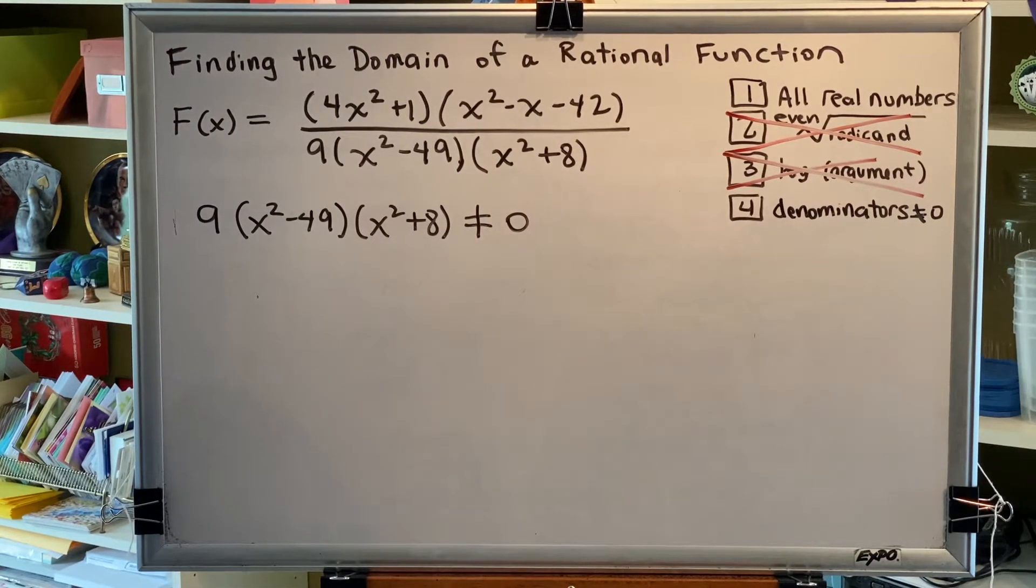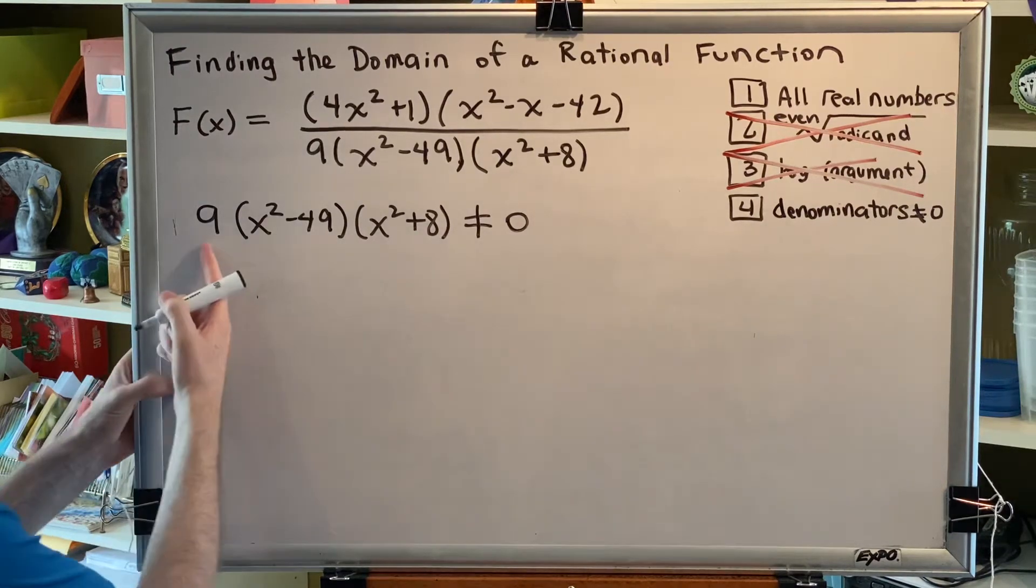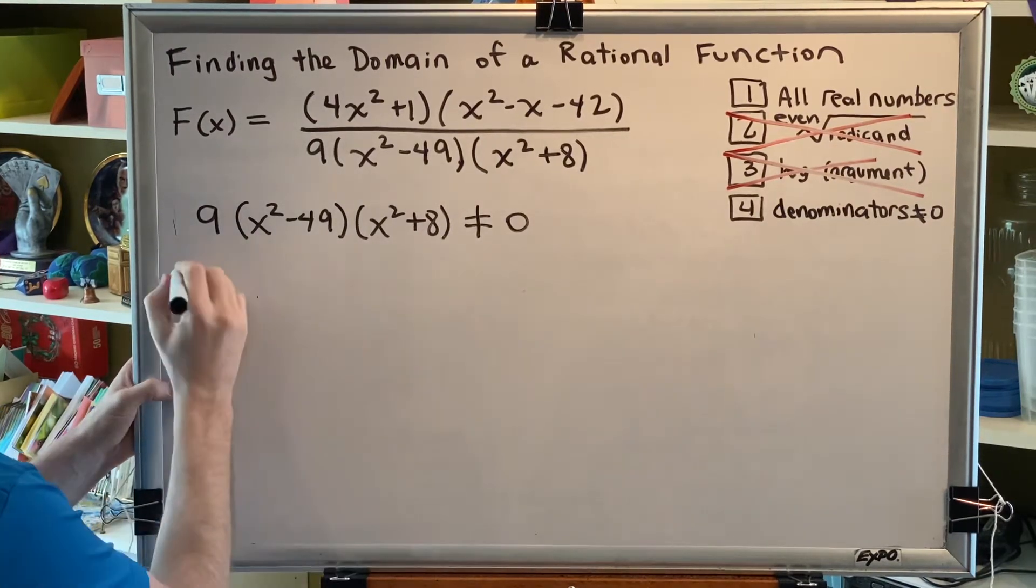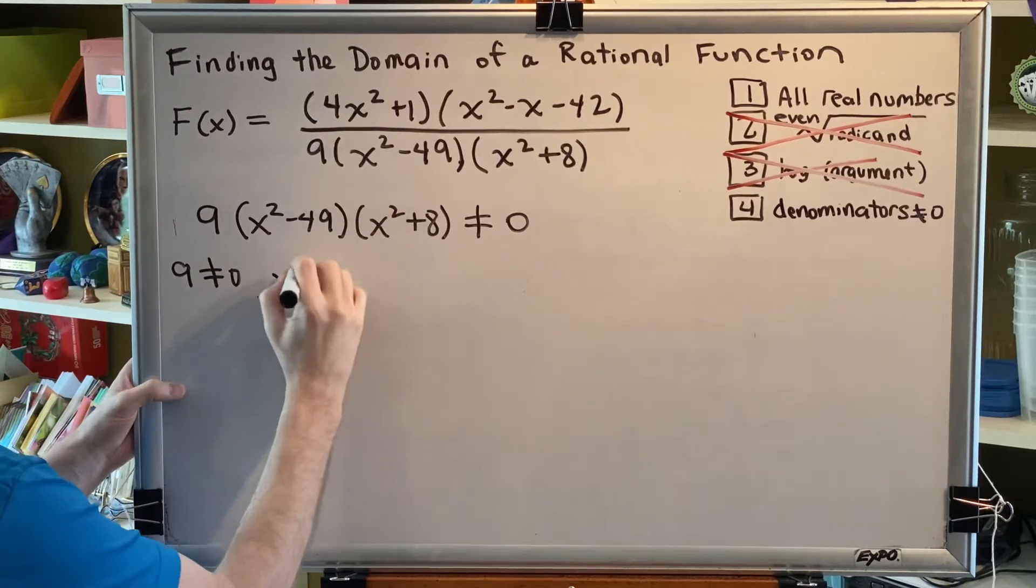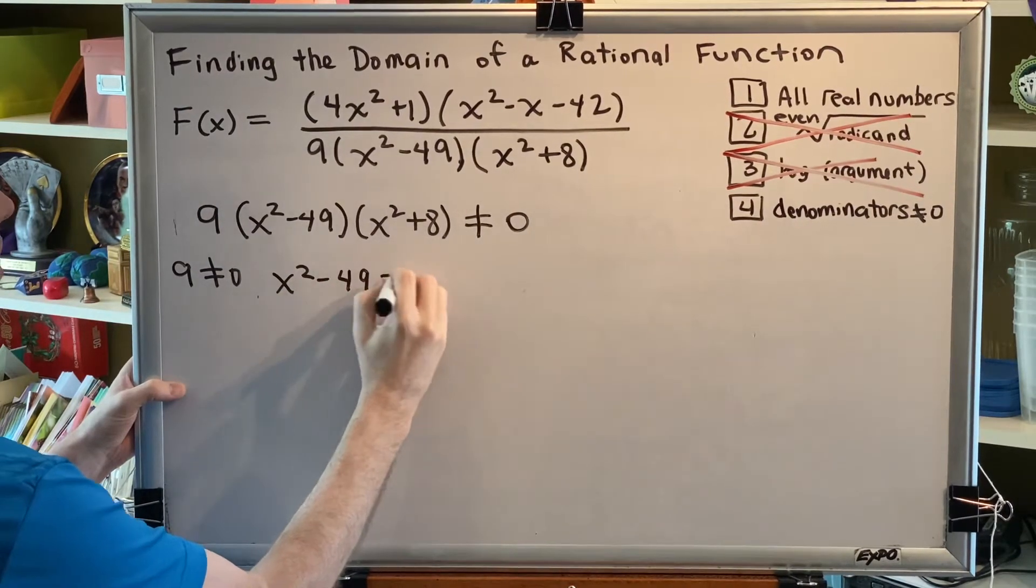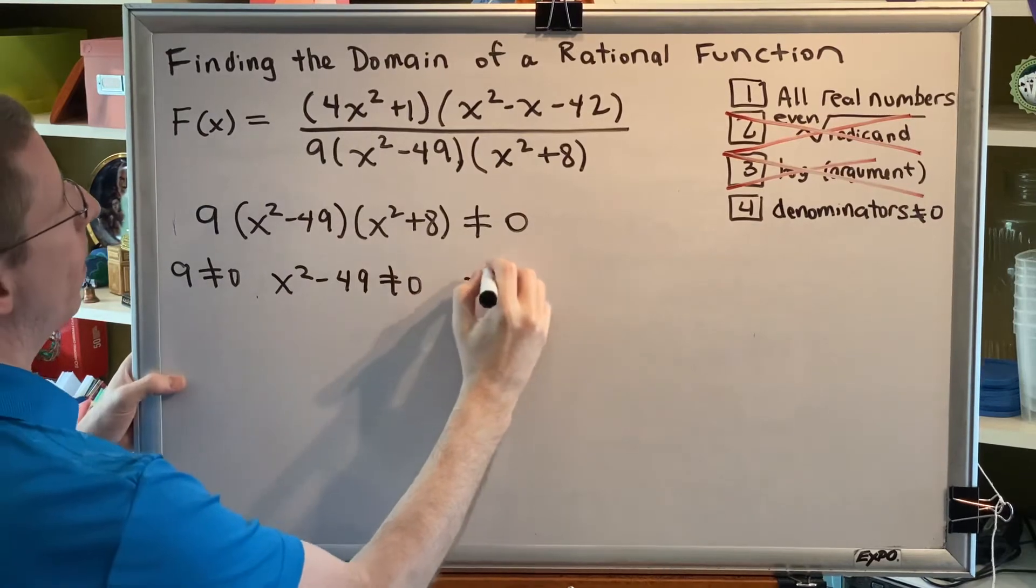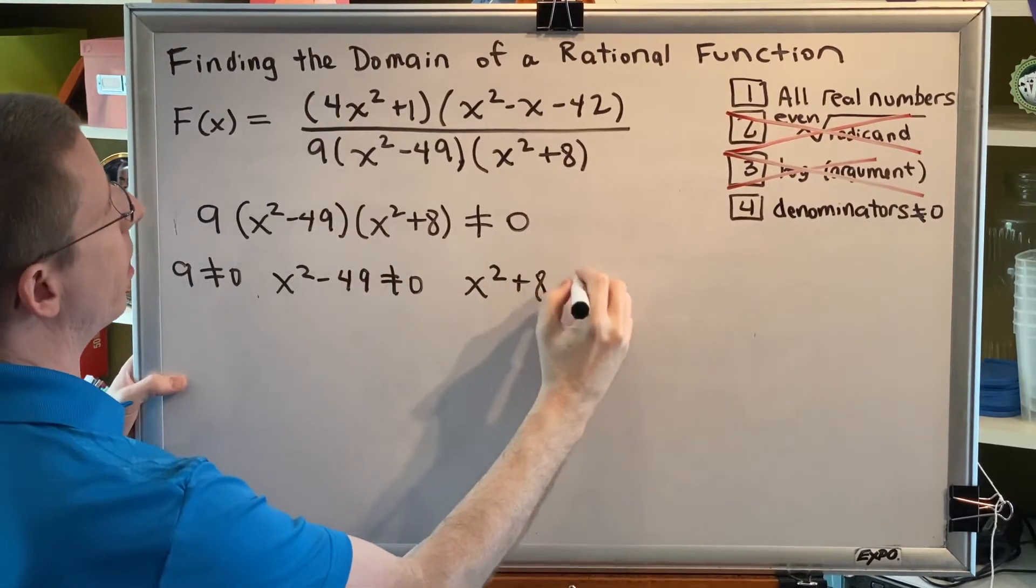By the zero product property, we can set each one of these factors to be not equal to zero. So we get 9 ≠ 0, x² - 49 ≠ 0, and x² + 8 ≠ 0.